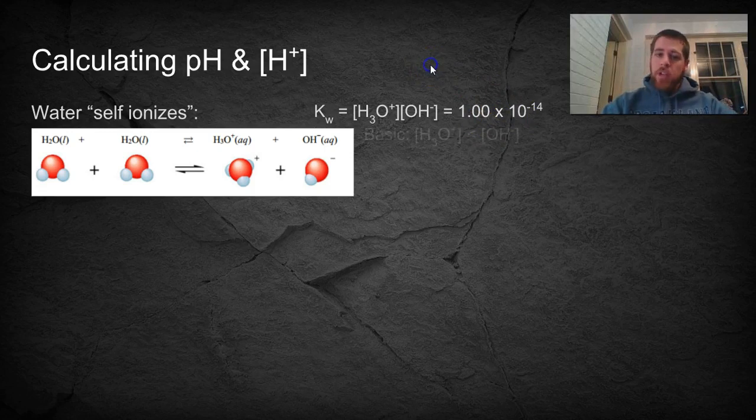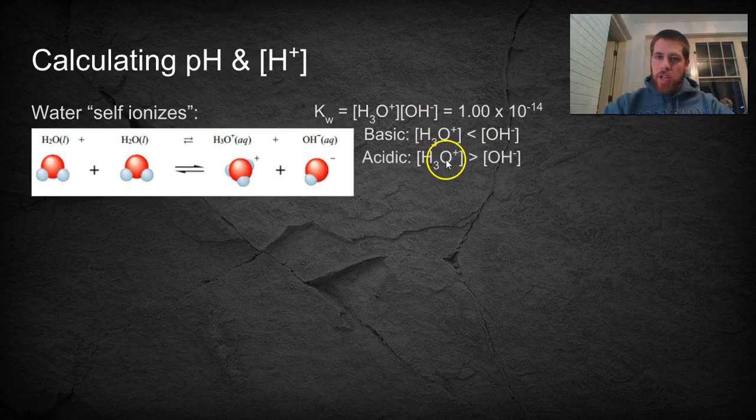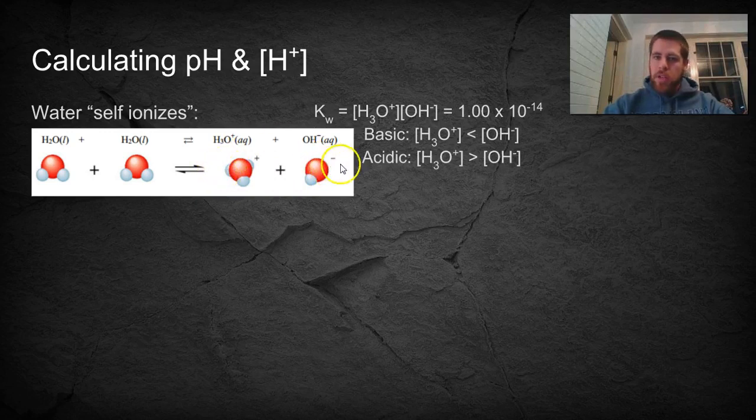And this is where our pH comes from. So in basic solutions, you have more hydroxide than hydronium ion, than H+. And in acidic solutions, you have more H+ and less hydroxide. In pure water, they're equal amounts, because if you're starting with just pure water, it's going to ionize in a one to one ratio, and you're going to have equal amounts of H+ and OH-.